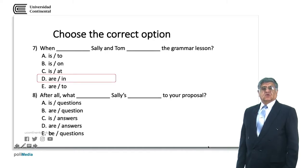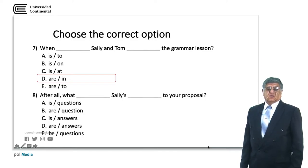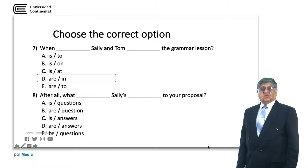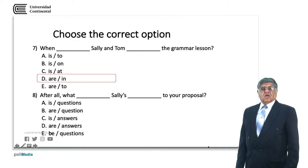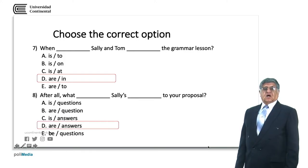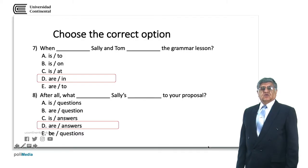What blank Sally's blank to your proposal? We need to keep gender, number, and coherence. 'Is' and 'questions' — 'is' is singular but 'questions' is plural, so that's not correct. Following this line of thinking, A, B, and C are incorrect. D and E might be, but B is the infinitive form of the verb 'to be'. The correct answer is 'are': 'After all, what are Sally's answers to your proposal?' — we are talking in plural about answers.